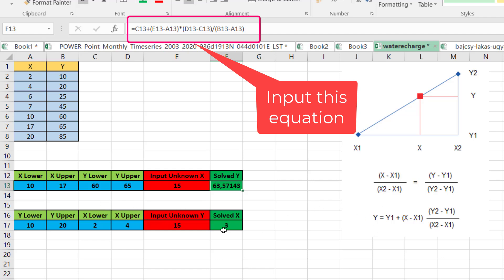I write for example I put 10 and 20 as y, and 2 and 4 as x. Input an unknown value y which is 15, and I get the result 3.